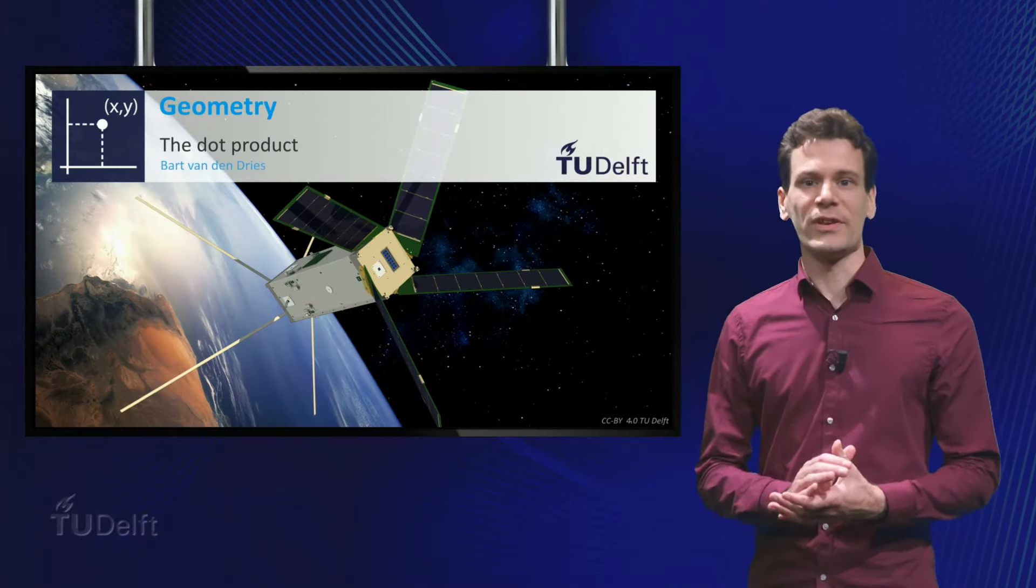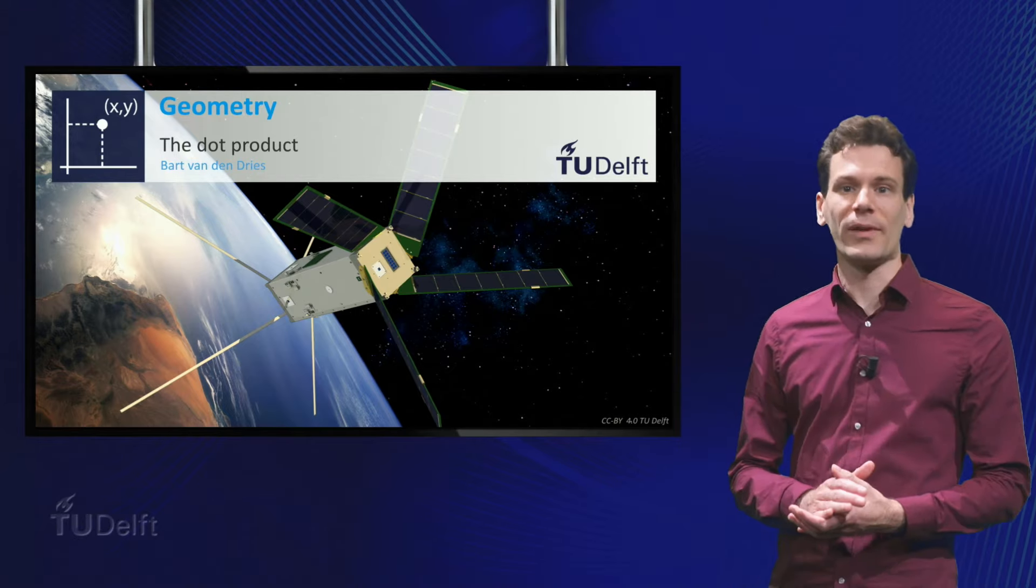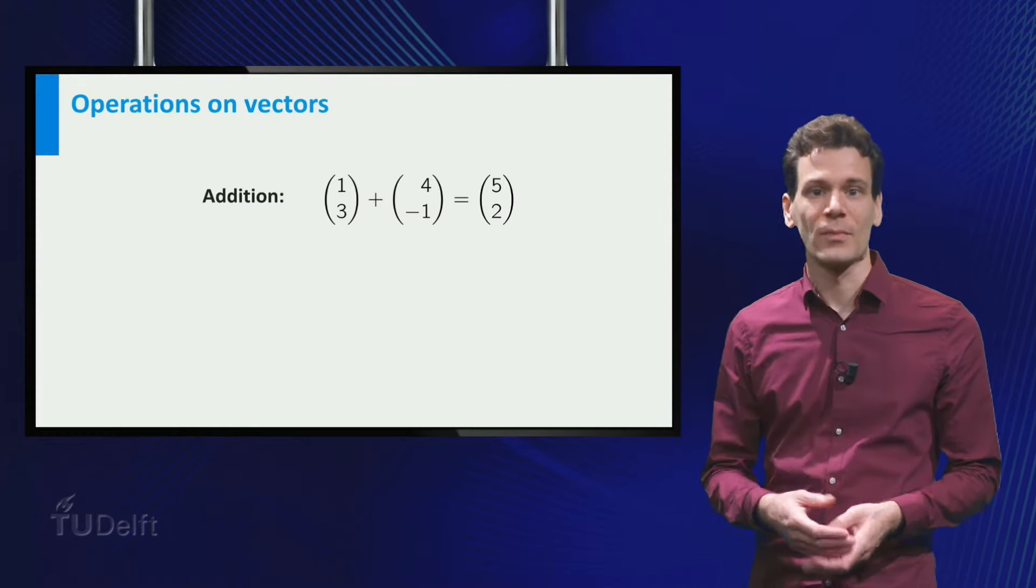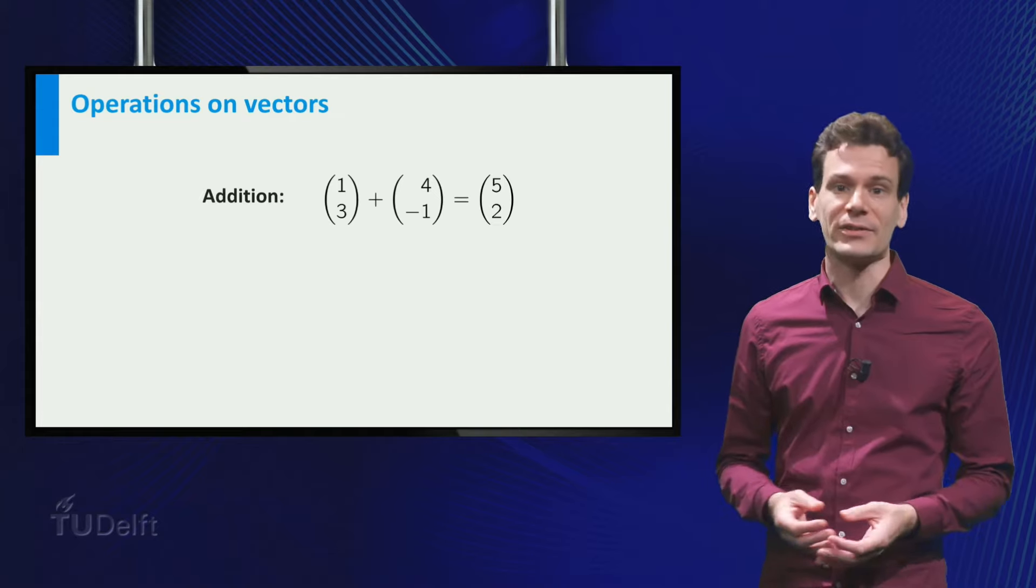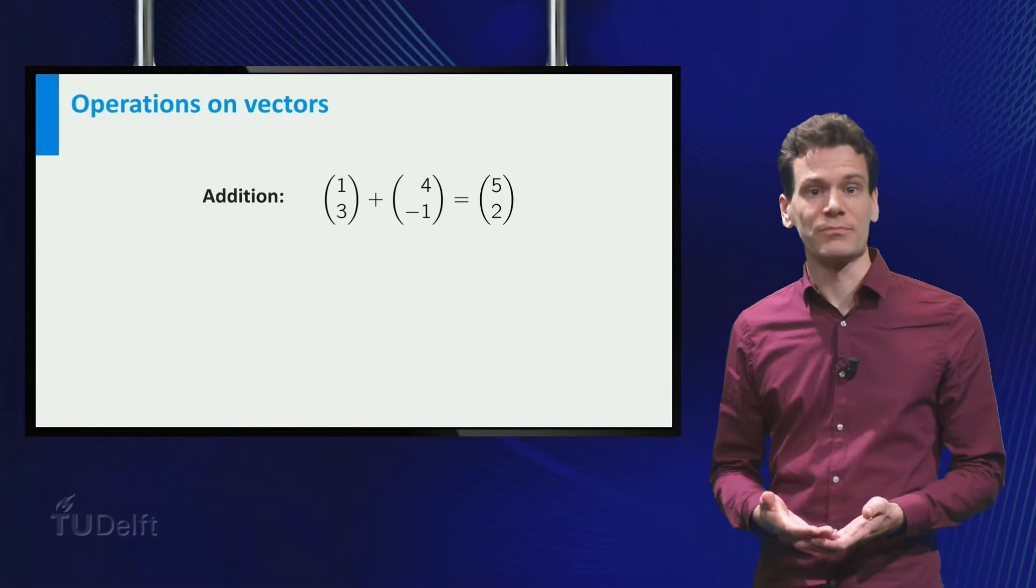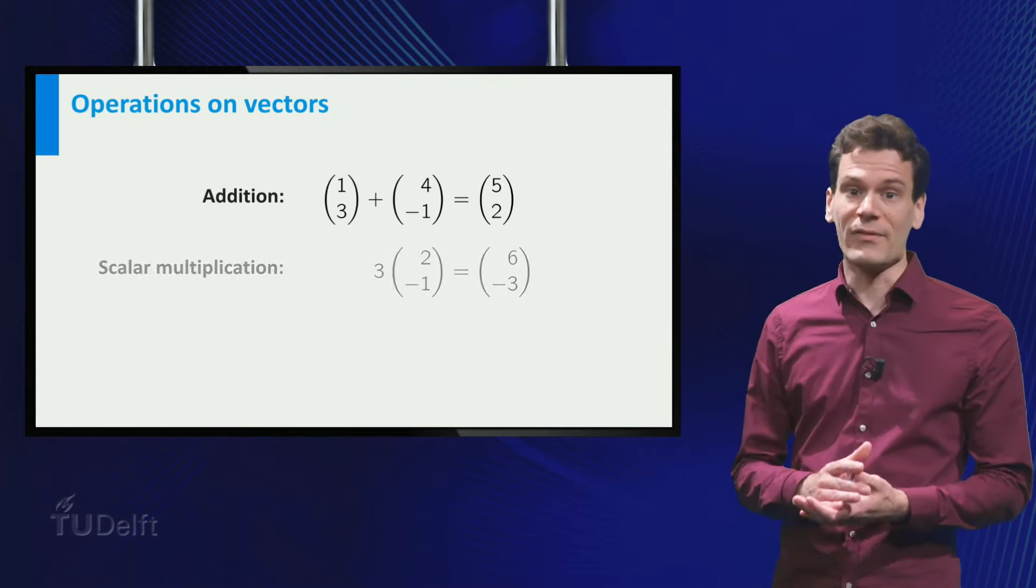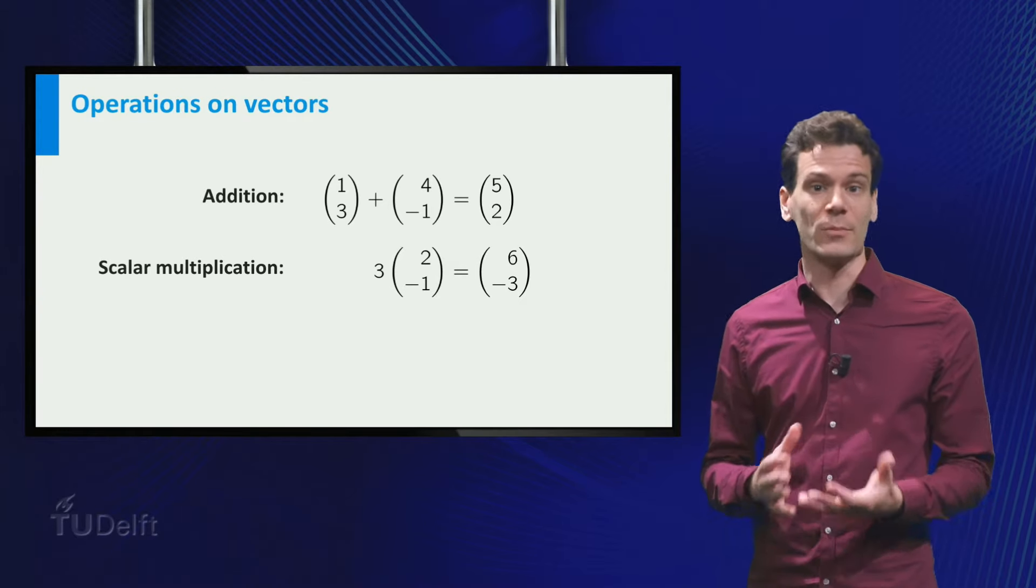Welcome! In previous videos, you have seen what kind of operations we can perform on vectors. For example, we can add vectors by simply adding the components. We can also multiply a vector by a scalar by multiplying component-wise.